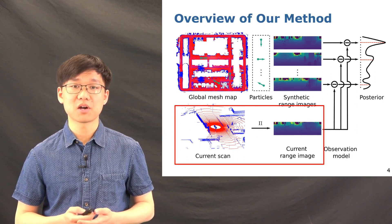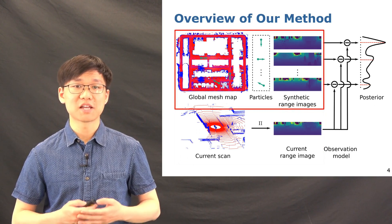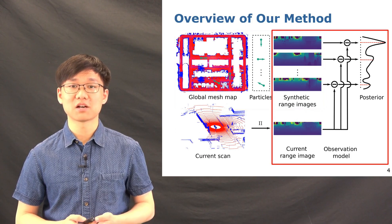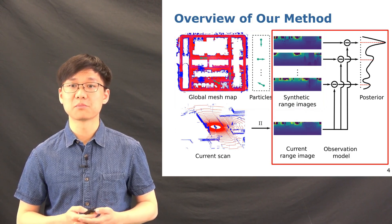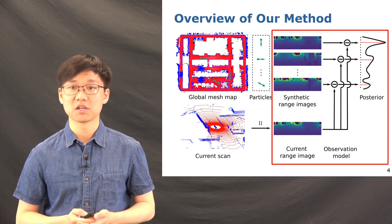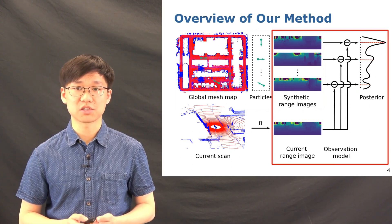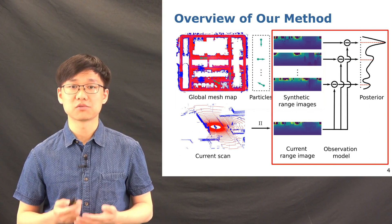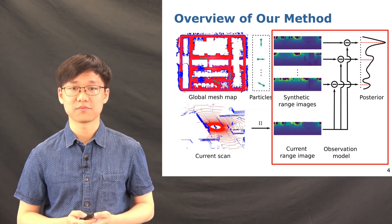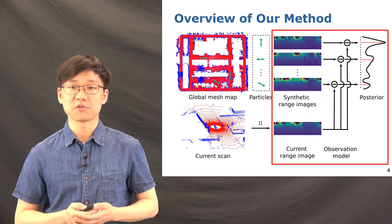And in the upper part, for each particle in the mesh map, we generate synthetic range images rendered at each particle position from the triangular map. Based on such range images from both the projection of the current LiDAR scan and the renderings for each particle of the map, we proposed a new observation model for LiDAR-based global localization and integrate it into the Monte Carlo localization system to estimate the posterior of the pose of the robot. In the following slides, I will give more detailed information of each module of our methods.